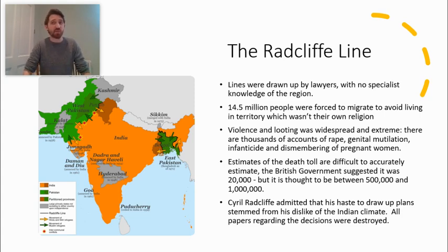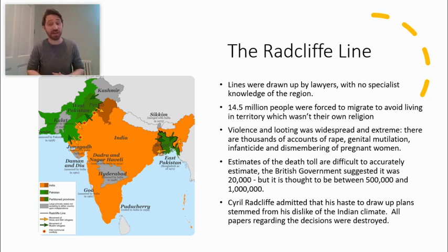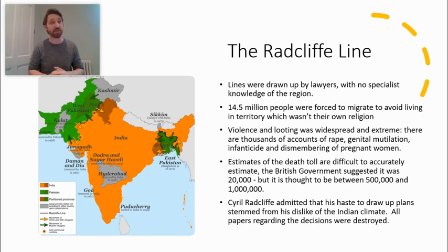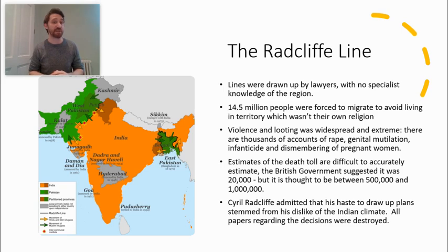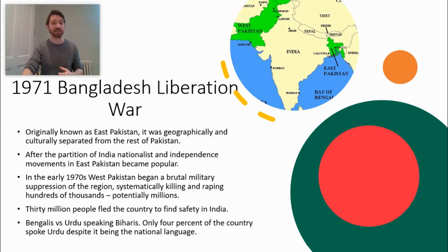What is awful is that Cyril Radcliffe, one of the leading people who drew the lines, admitted he drew them so quickly because of his dislike for the heat of the Indian climate. Had they actually spent the time to work out the deeply divided religious communities, there would almost certainly have been much less bloodshed. A mixture of British administrative incompetence and the deeply divided local religious and political communities created a perfect storm after the partition of India.